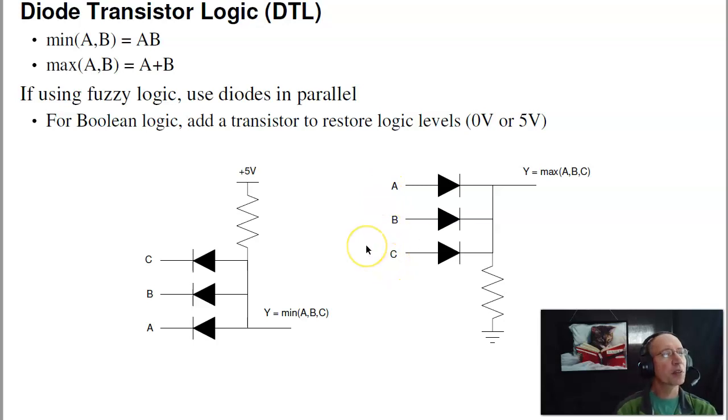Now the problem with fuzzy logic is if I go through a diode, I'm going to lose 0.7 volts for each diode. And if I have six or seven gates in a row, that's a problem. Second problem is this gate doesn't have a lot of current capability.